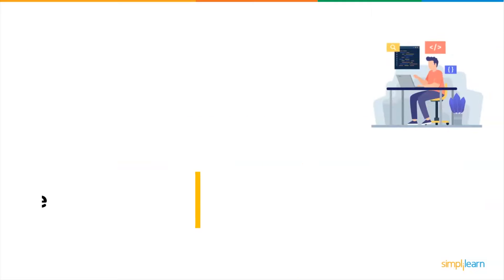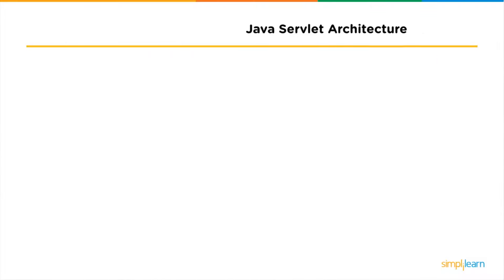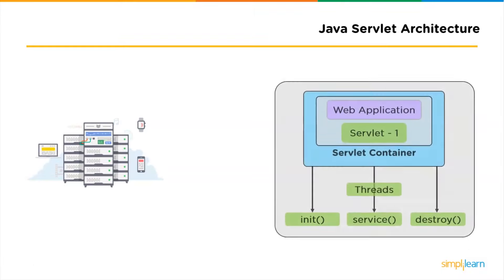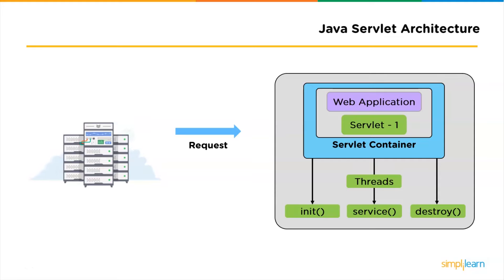Now we shall understand servlet architecture. The architecture of a servlet can be understood by reverse engineering the lifecycle of a servlet. This is how servlet execution takes place when a client or browser makes a request to the web server. The servlet architecture includes the following: first, the servlet interface. To write a servlet, we need to implement the servlet interface.